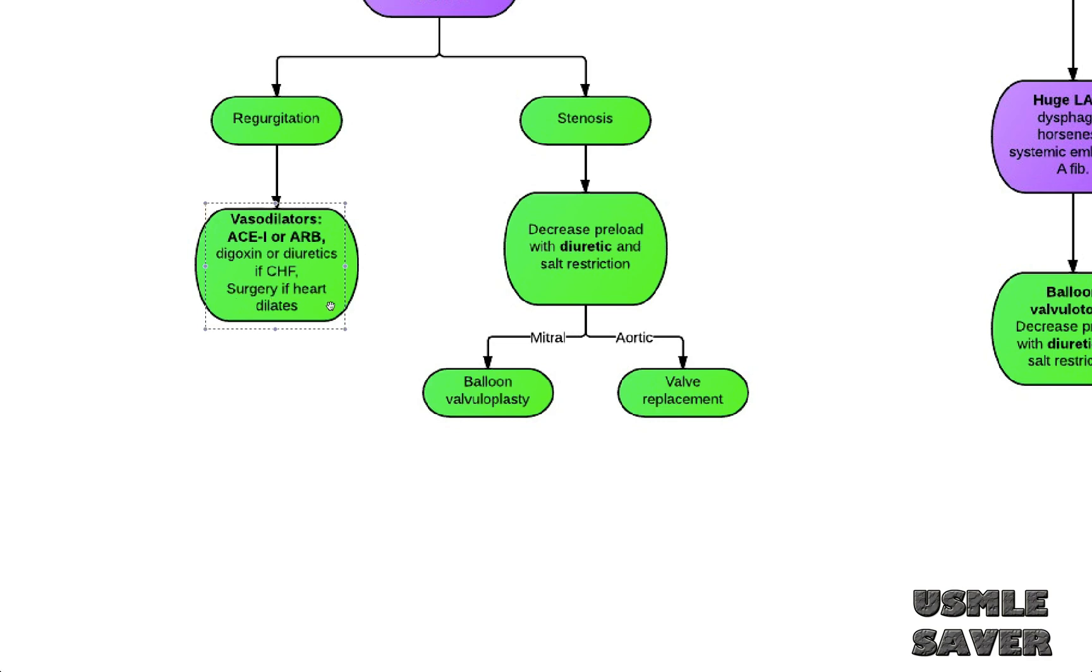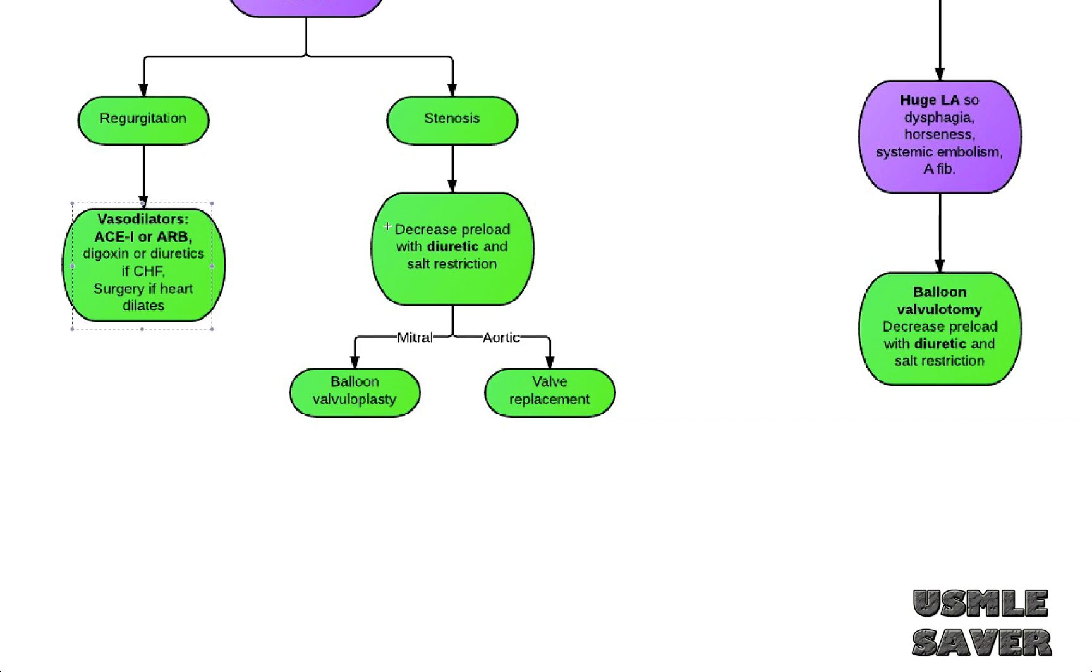So that's the management for aortic and mitral regurgitation. Now let's look at the stenosis. You want to decrease patients preload with diuretics and salt restriction. Surgery is the definitive treatment for both. For mitral valve you want to do balloon valvuloplasty. For aortic stenosis you want to replace the valve because aortic stenosis is mostly due to calcification.